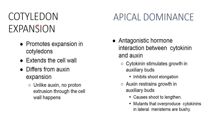Cotyledon expansion: cytokinins promote expansion of cotyledon and extend the cell wall. Unlike auxin expansion, no proton extrusion through the cell wall occurs. Apical dominance: there is an antagonistic hormone interaction between cytokinin and auxin. Cytokinin stimulates growth in axillary buds and inhibits shoot elongation, whereas auxin restrains growth in axillary buds and causes the shoot to lengthen. Mutants that over-produce cytokinin in the lateral meristem are bushy.